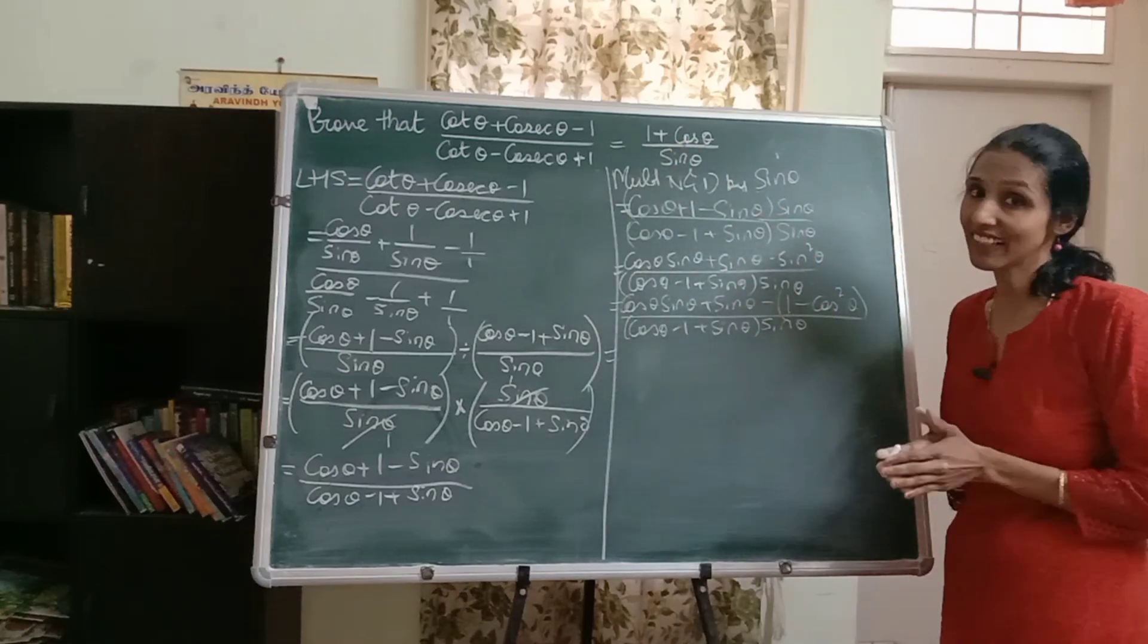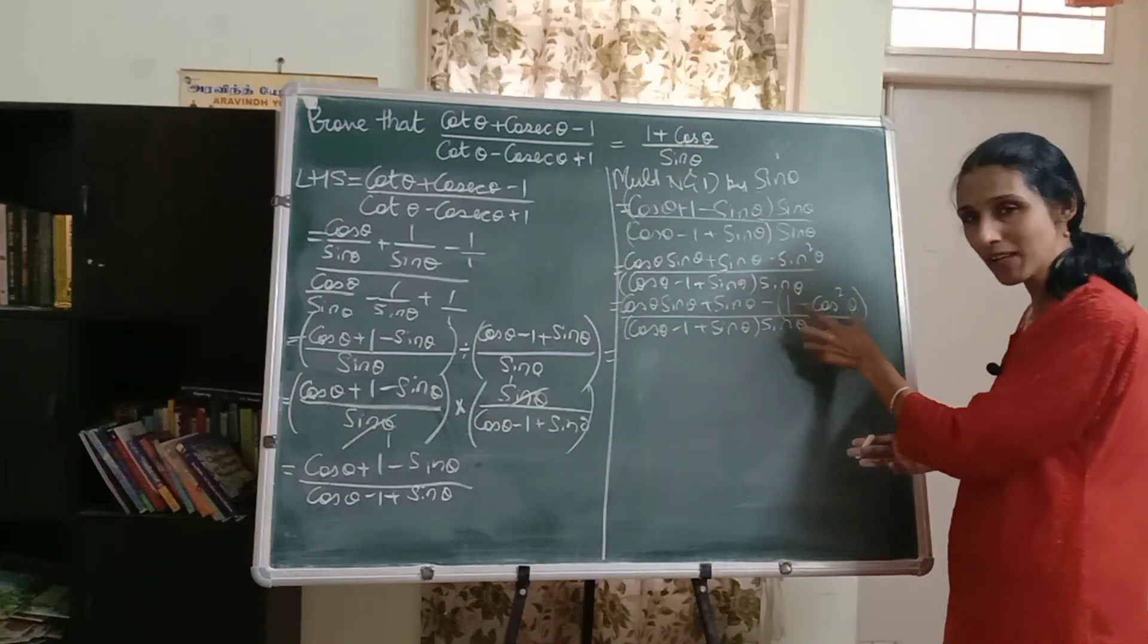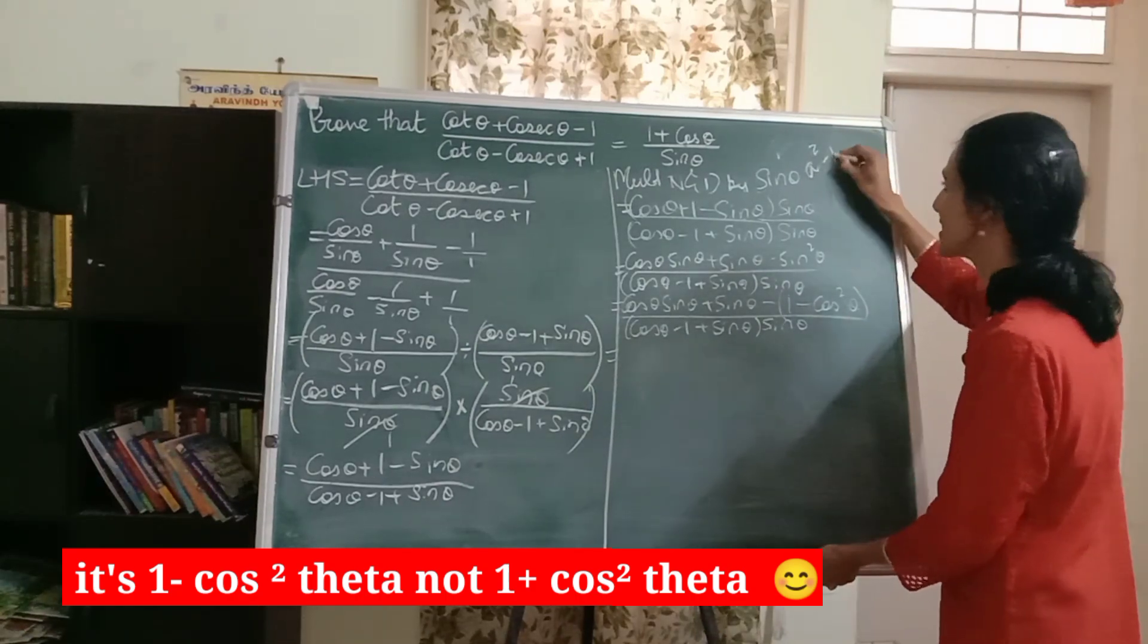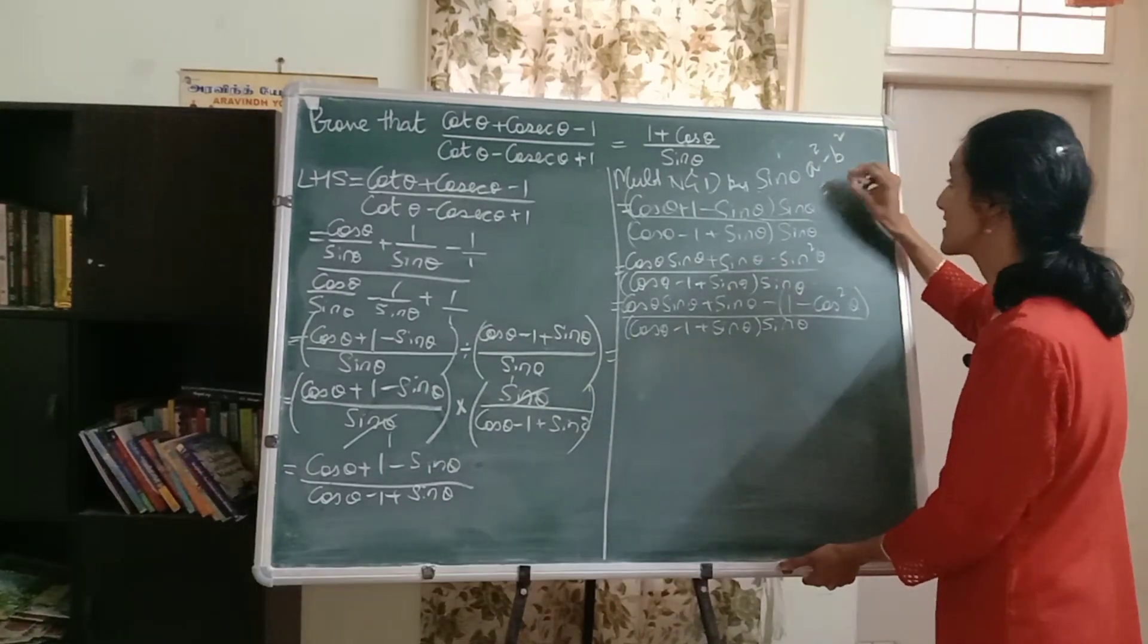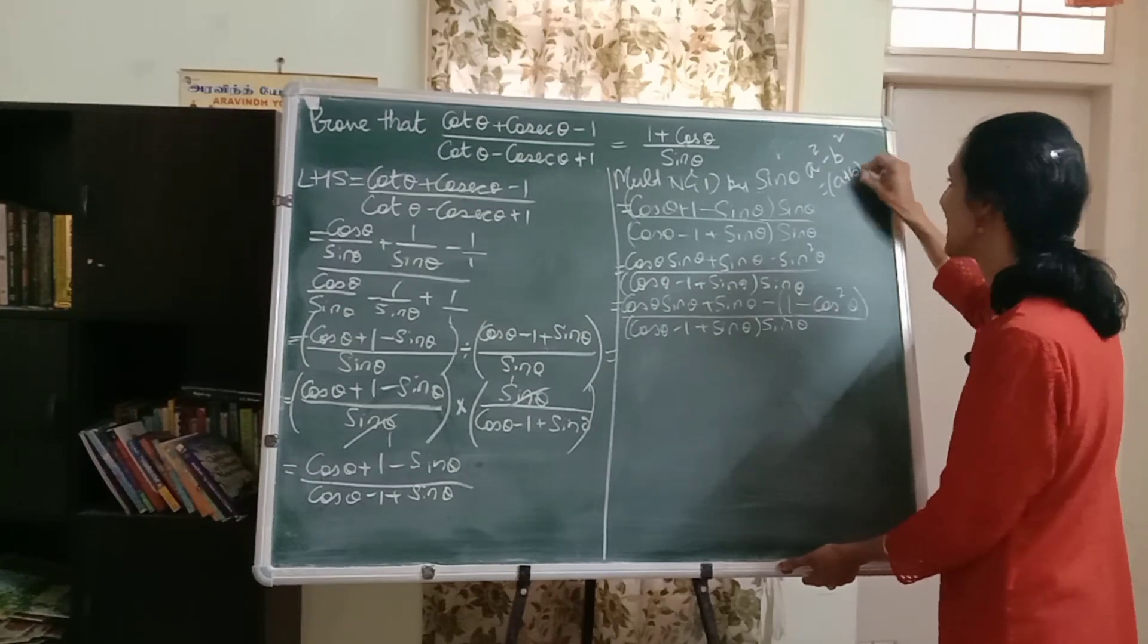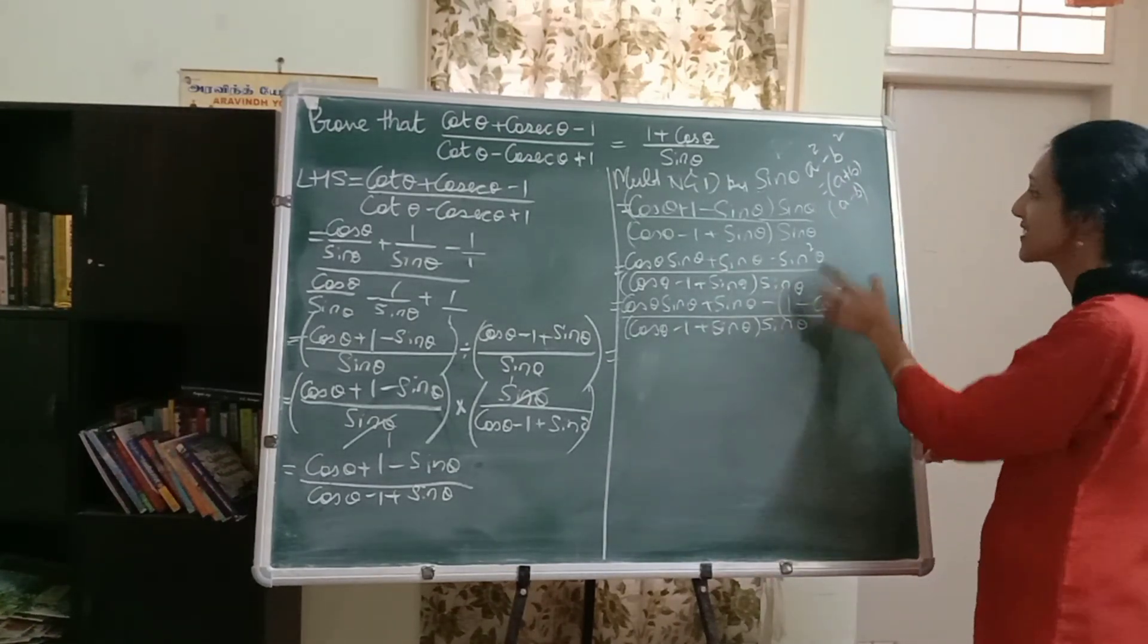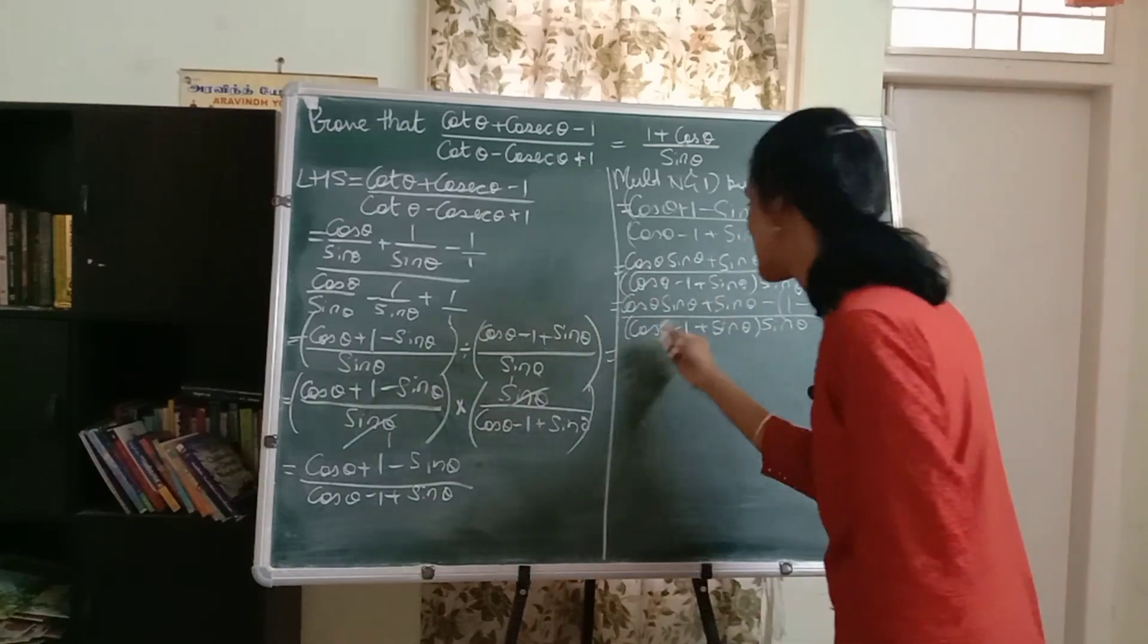Well, again, see what we want. We want one plus cos theta in the numerator. Now, does this seem familiar? One plus cos square theta. Does it not look like a square minus b square? Yes, the identity a plus b into a minus b. So I can surely write this as this identity. Let's try that.